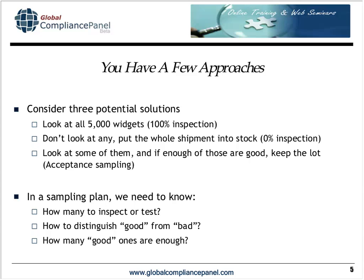In these sampling plans, we need to know a few things: how many to inspect or test, how to distinguish good from bad — classifying each item as conforming or nonconforming — and how many good ones are enough. For example, if we look at 20 items and find 15 good and 5 bad, is that acceptable? That's the kind of information we get out of the sampling plans.